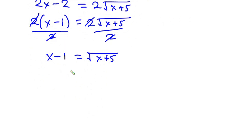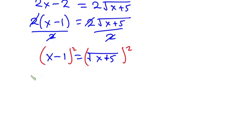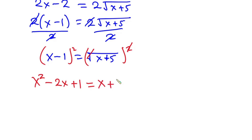Since we want to find the value of x and x is still under a square root, we need to square each side to remove it. Squaring both sides: the left gives x squared minus 2x plus 1, and the right gives x plus 5, since the square root cancels.